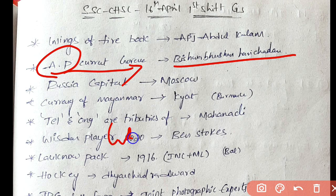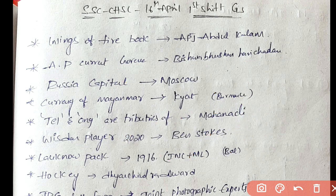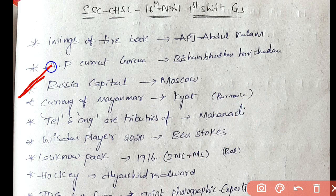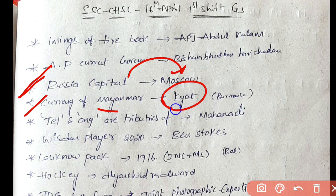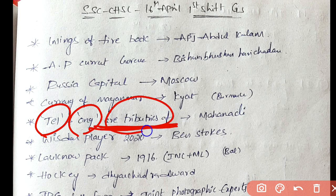Current governors. We have Bishwa Bhushan Harichandan. States, governors, CMs and capitals, lieutenant governors, NDMA, Odisha, UTC lieutenant governor. Next one, Russia capital, Myanmar currency. Russia capital is Moscow, Myanmar currency is Kyat. Tail and Ong are tributaries, tributaries of Mahanadi.